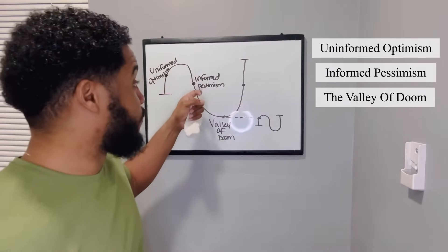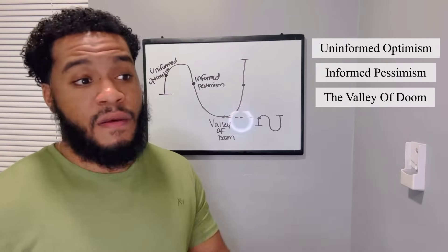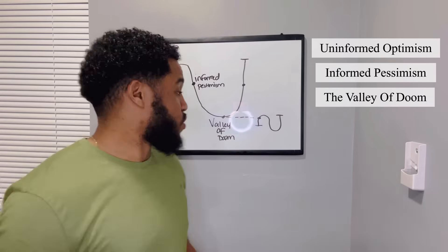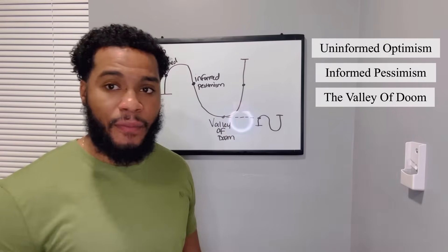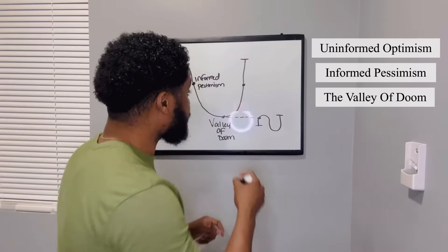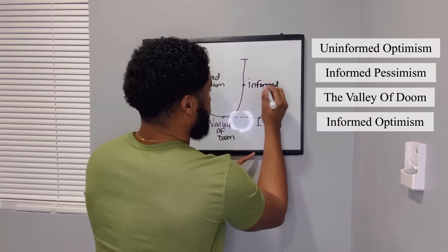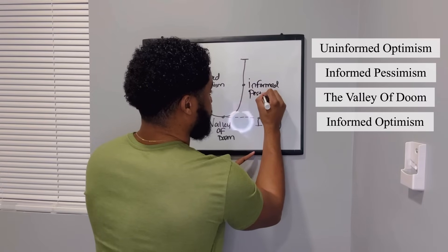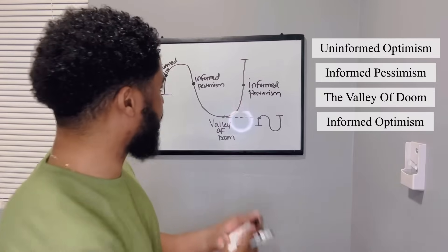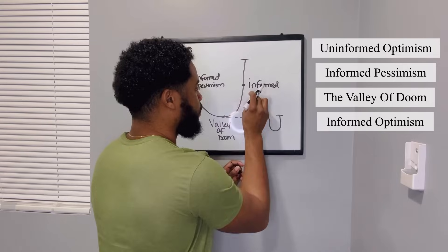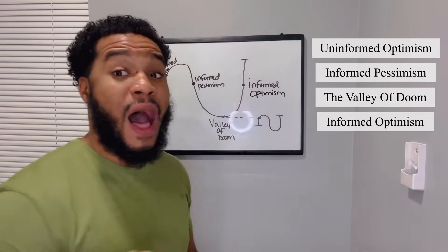After informed pessimism, they get to the valley of doom. They're like, forget this, I don't want no part of this. This is hard, harder than I thought. I don't want to do this anymore. So this is where we come in. This is where when you have a mentor, it's going to take you over the top. If you can get past this stage, the next step is going to be informed optimism.